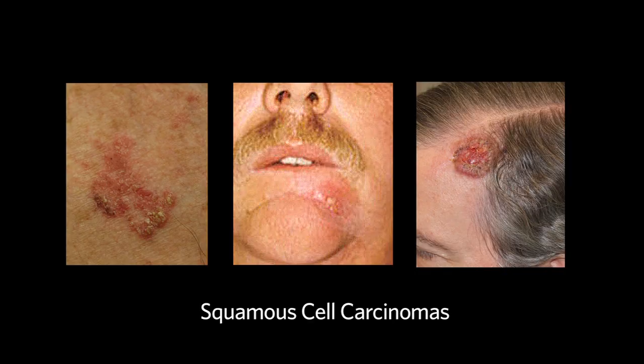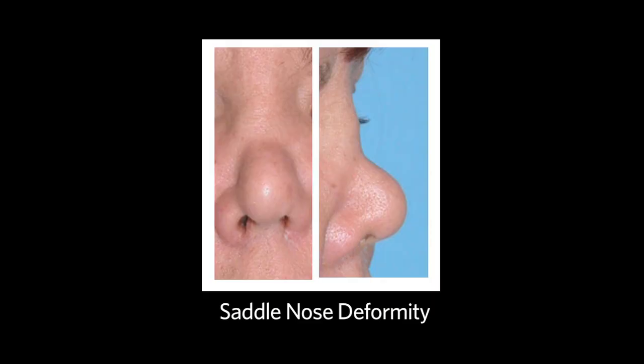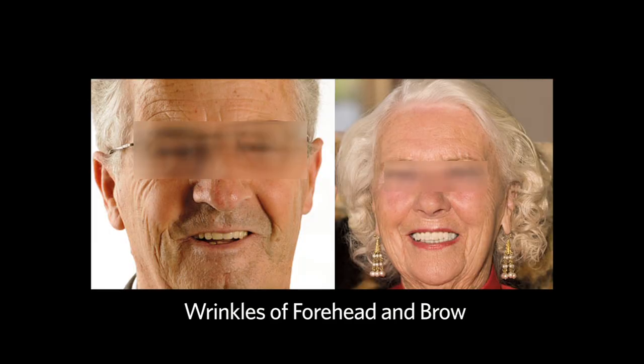Common abnormalities seen are squamous cell carcinomas and basal cell carcinomas. Obvious asymmetry or deformity of the nose or wrinkles of the forehead, around the eyes, or upper lip.